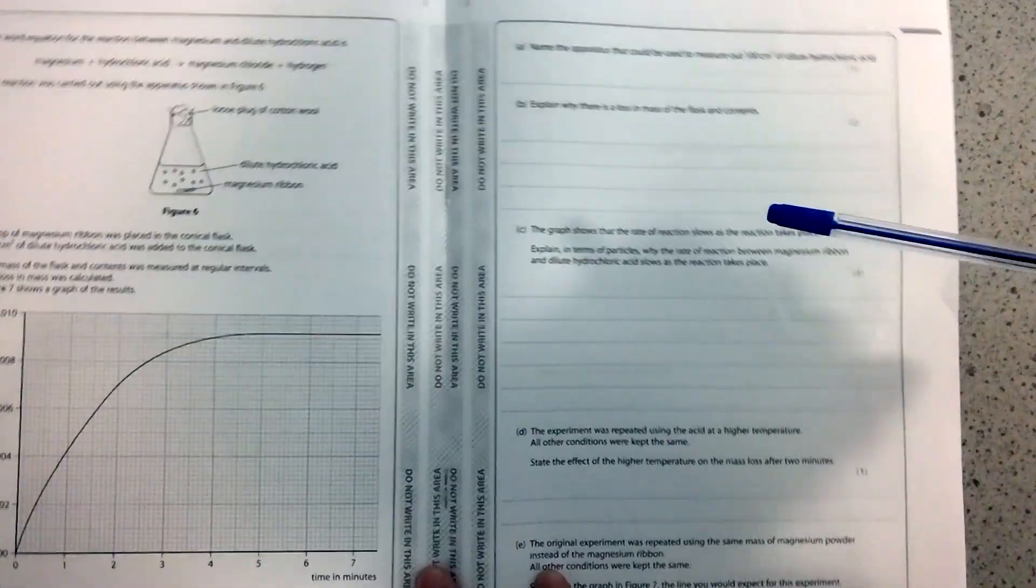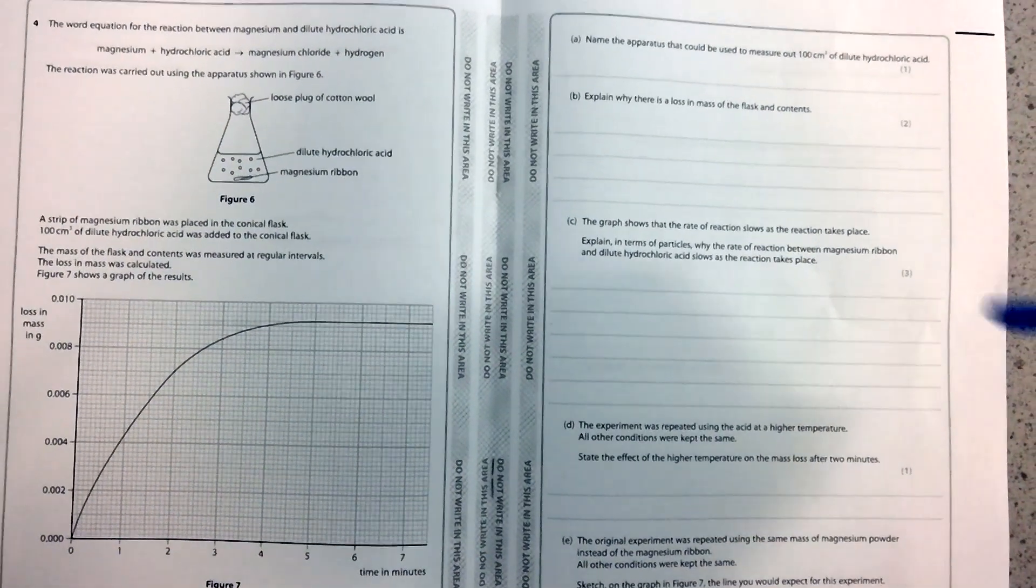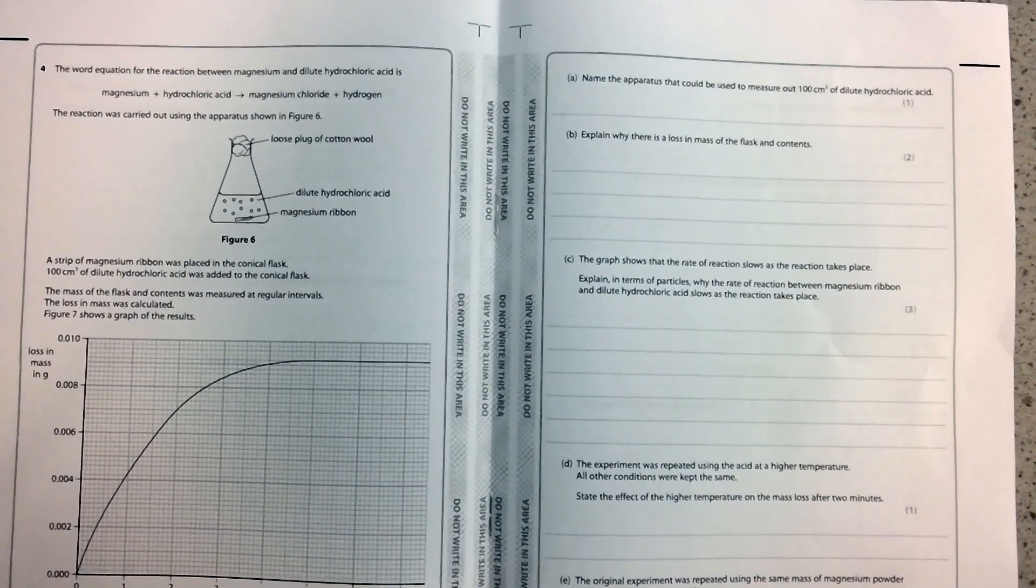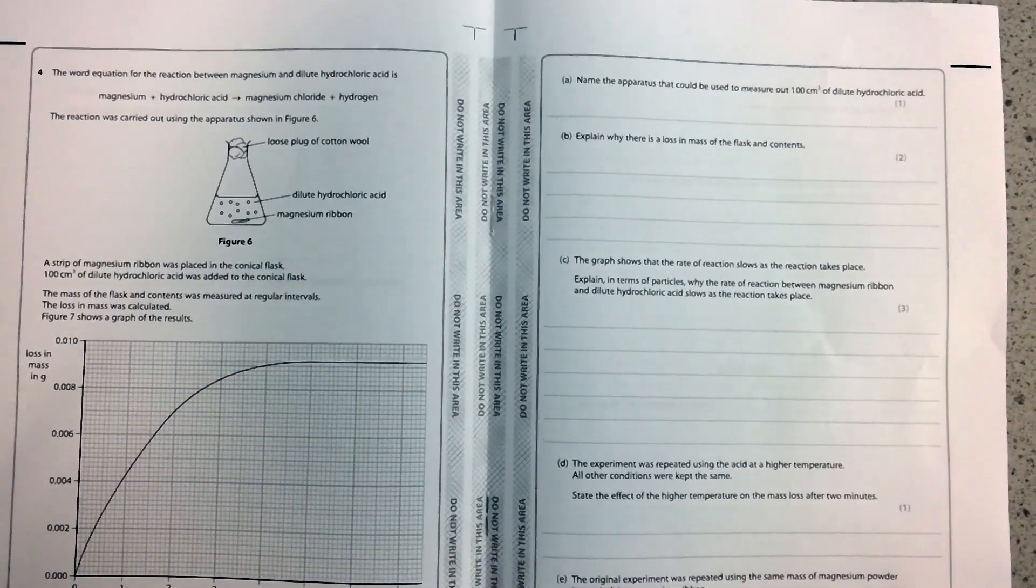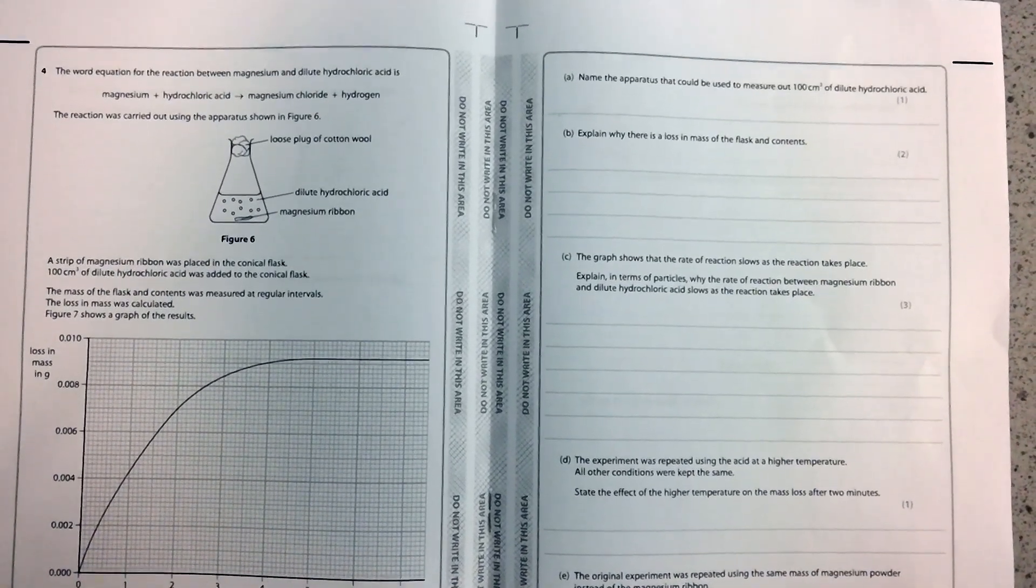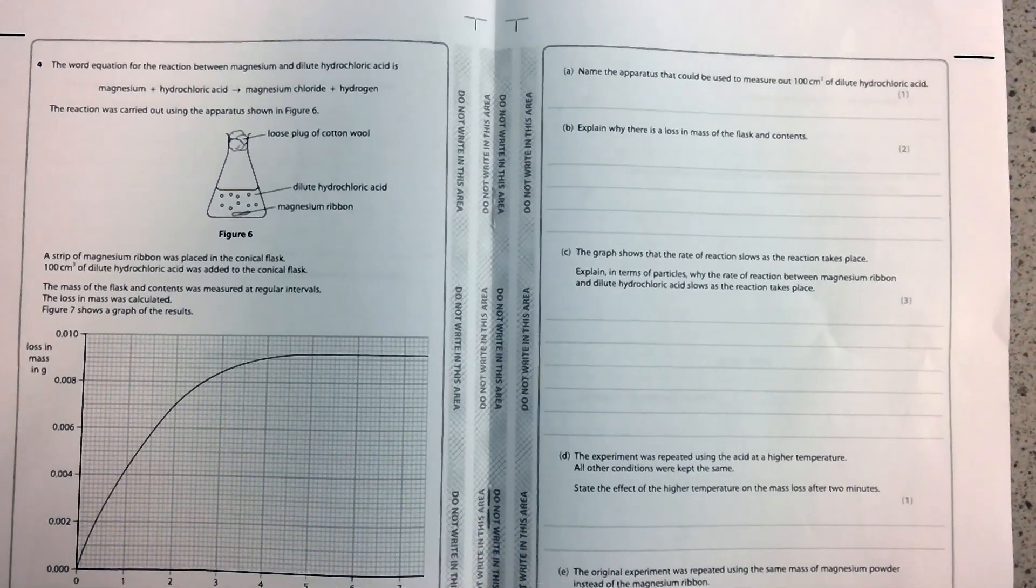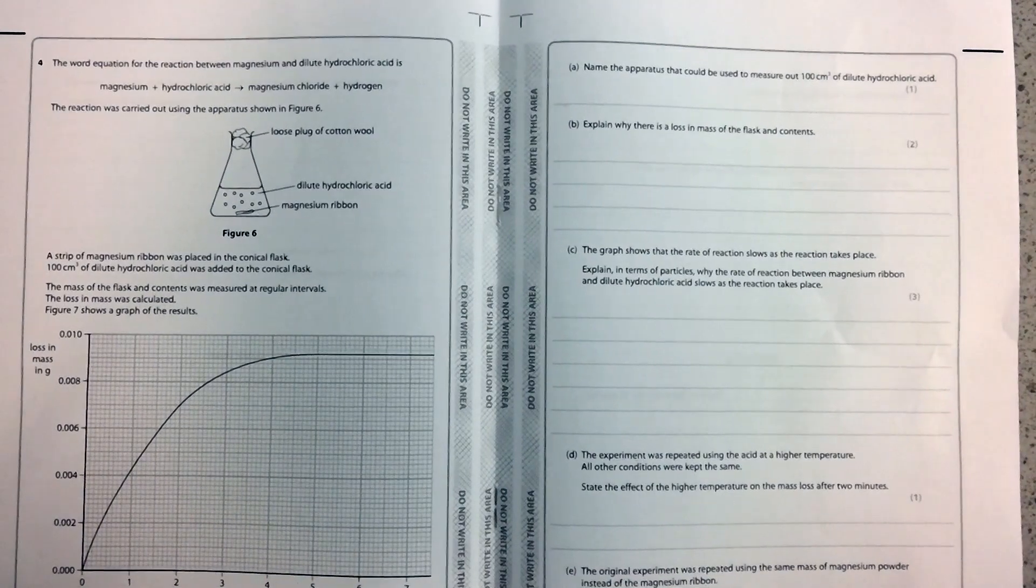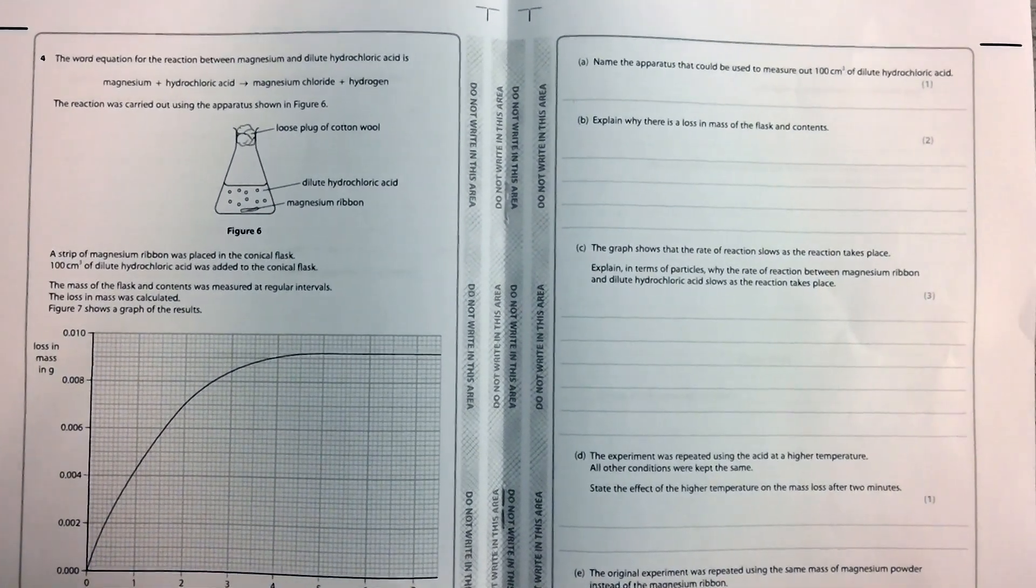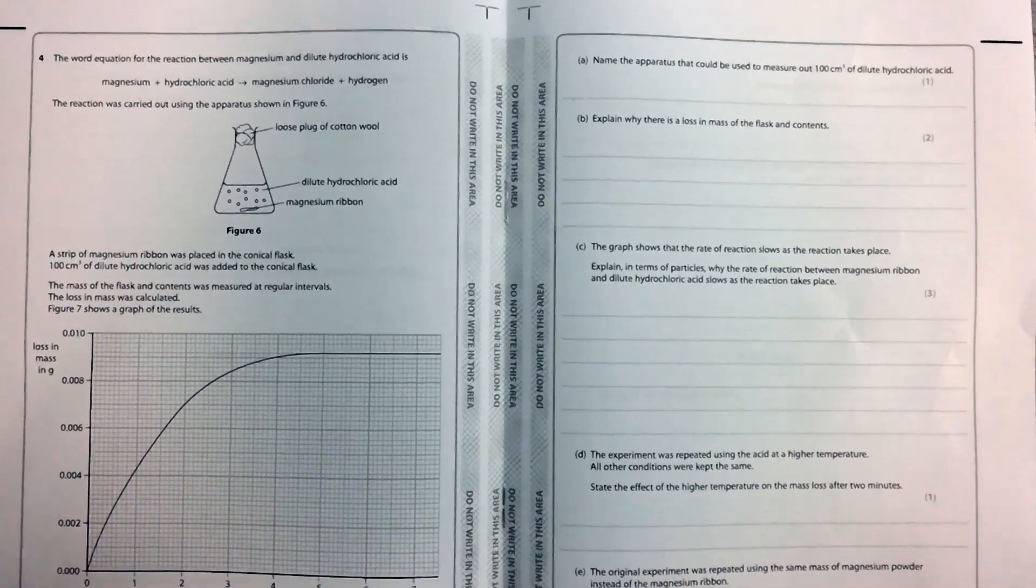The very first question asks you to name the apparatus that could be used to measure out 100 centimeters cubed of dilute hydrochloric acid. The only real answer you could be giving there is a measuring cylinder. Remember that the narrower a vessel, the more accurate, so do not say pieces of equipment like beaker, conical flask, or even worse, a measuring jug.